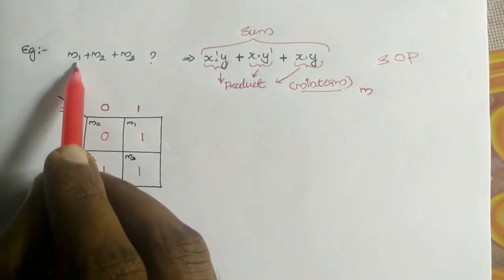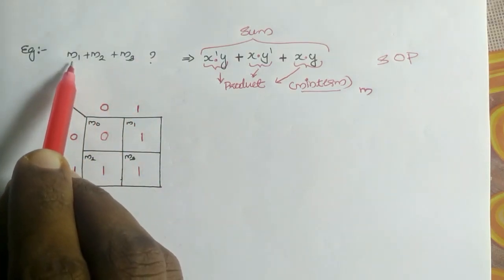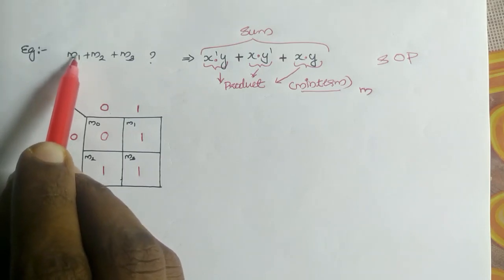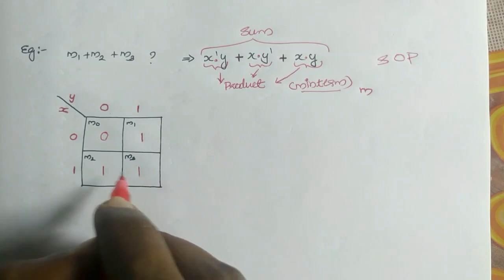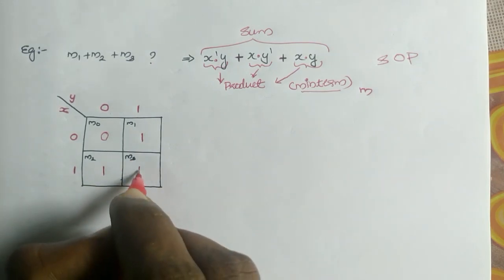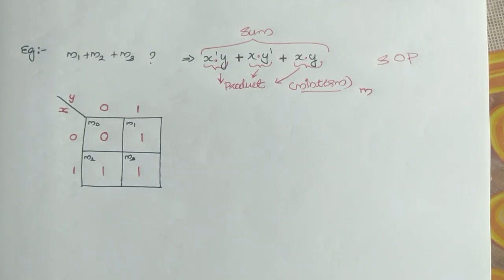Okay, look at the example M1 plus M2 plus M3. The first step is, whenever you are seeing a minterm, you have to put one there. So M1, put one here. M2, put one here, then M3, put one here. The other cells are 0. Step 2 is you have to find adjacent cells.